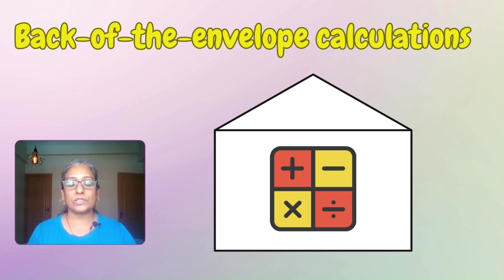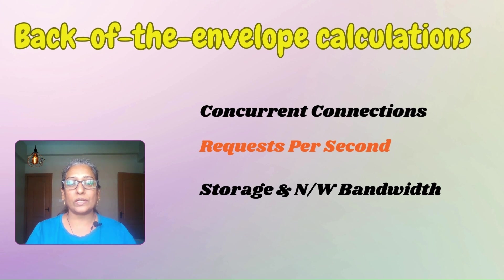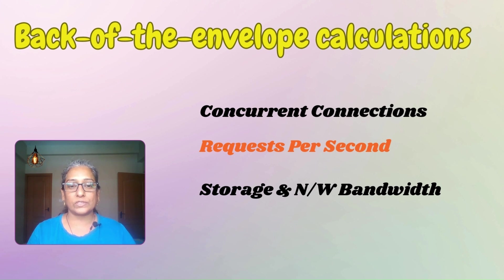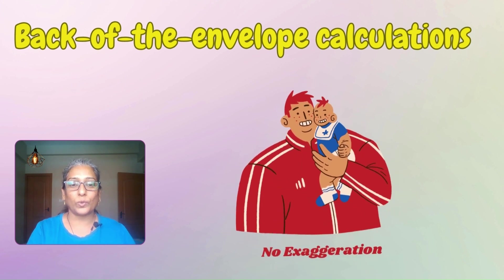Back of the envelope calculations refer to quick and rough estimates done using simplified assumptions. They help us critically think about performance, scalability, and resource requirements. Examples include the number of concurrent TCP connections a server can handle, the number of requests per second a web, database, or cache server can handle, and the storage and network bandwidth requirements of a service. Practice and be comfortable with these calculations, ensuring that scale assumptions are reasonable and not overly exaggerated.